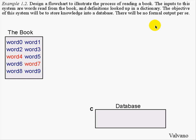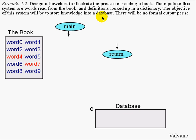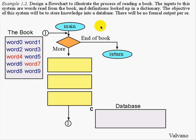The overall function this system will execute is to transfer knowledge from a book, which consists of words, into a database which will contain the knowledge of the book. As we saw from the last example, flowcharts have an entry point — in this case called main — and this example will have an exit point called return. The basic approach is to use the flowchart to describe the software algorithm, which will begin at the top and end when we get to the end of the book. We will use a while loop to define the overall function, which allows us to process words in the book over and over again until we reach the end of the book.